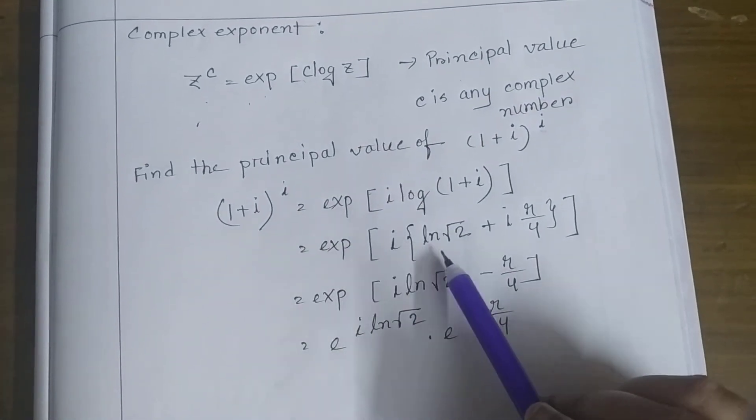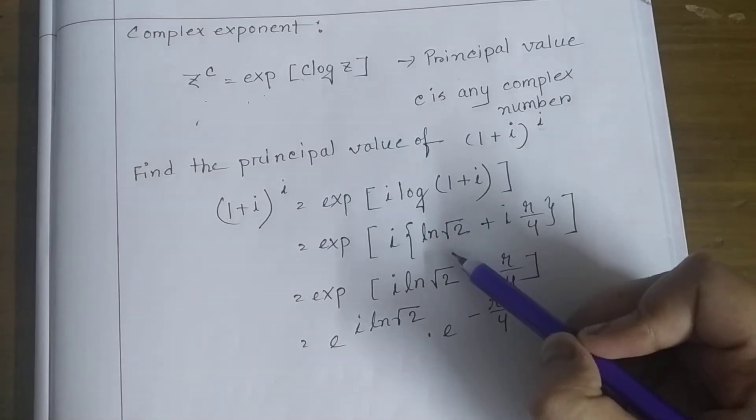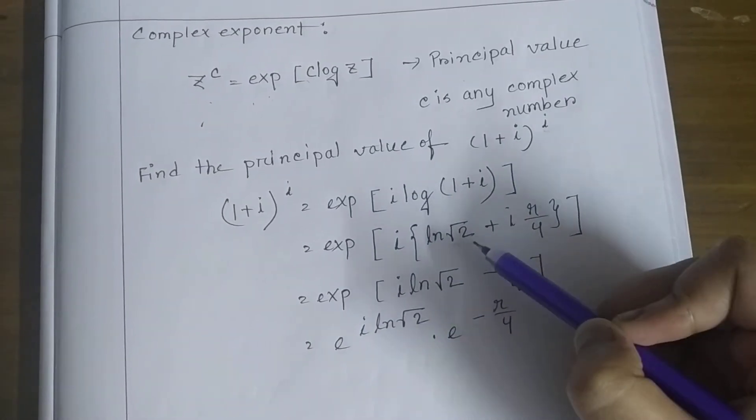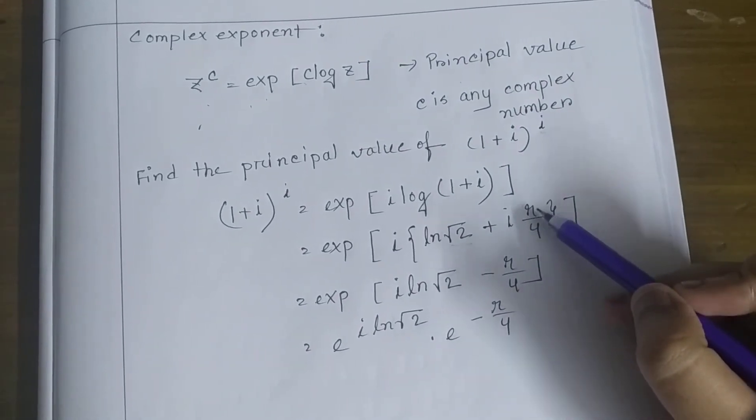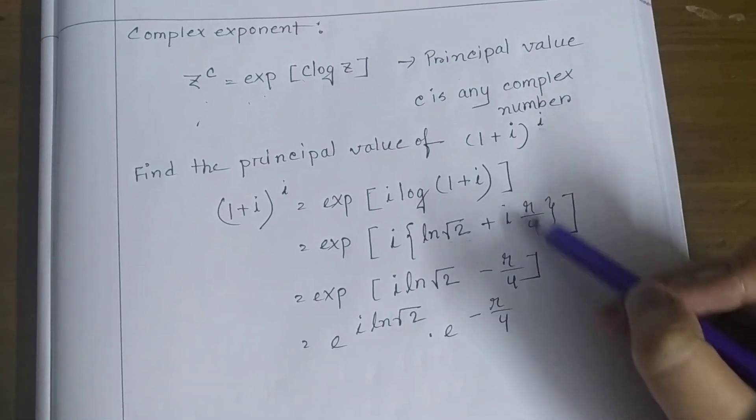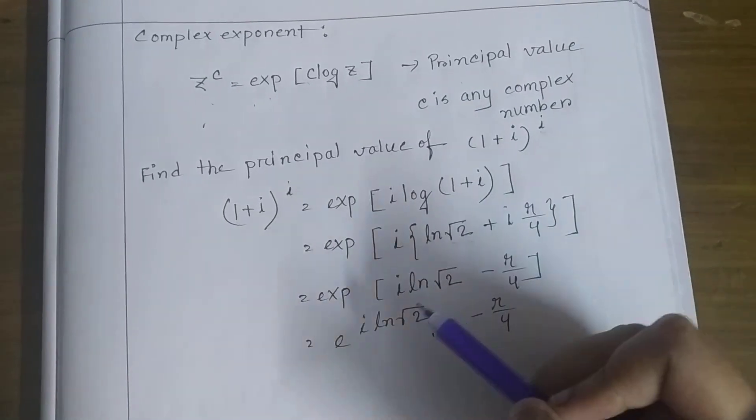So exponent of i ln root 2. What is root 2? Root 2 is the modulus of z and plus i pi by 4. What is pi by 4? This is the argument of z.